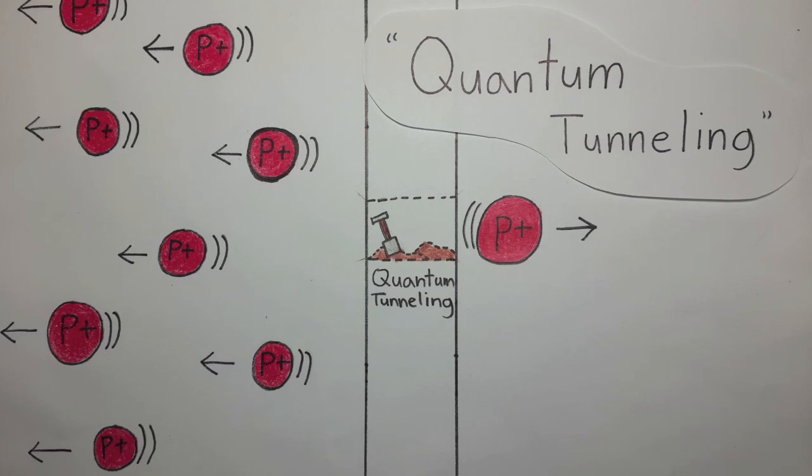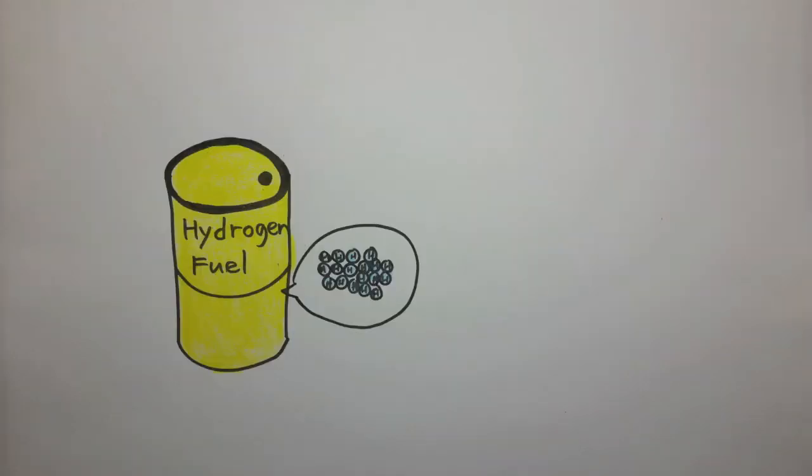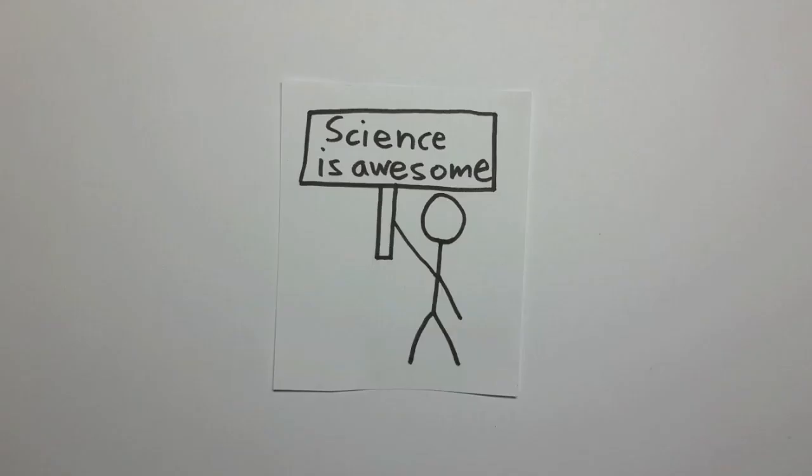Because quantum tunneling has such a small probability of happening and the number of hydrogen atoms fusing is small relative to how much hydrogen the sun has, the sun has so much more fuel waiting to be converted into energy through fusion. Thanks to Quantum Mechanics for providing us sunlight every day.